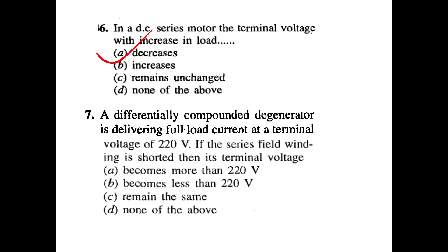Eighth question: A differentially compounded generator is delivering full load current at a terminal voltage of 220 volts. If the series field winding is shortened, does the terminal voltage become more than 220 V, less than 220 V, remain the same, or none of the above? It becomes less than 220 volts. The series field winding short reduces the terminal voltage below 220 volts.